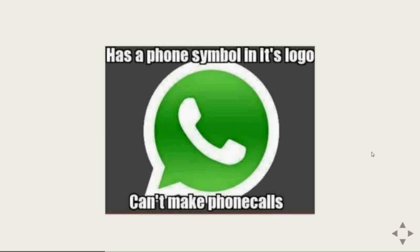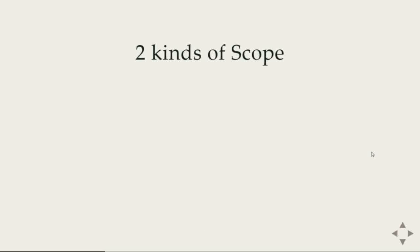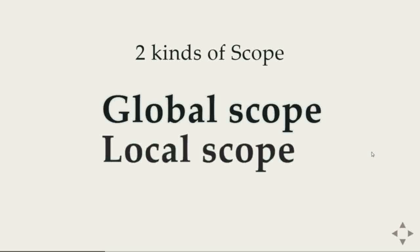In JavaScript, there are two kinds of scope. The first one is global scope and the second one is local scope.